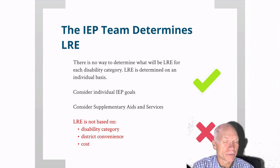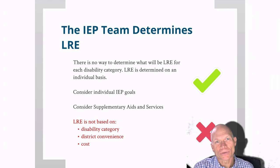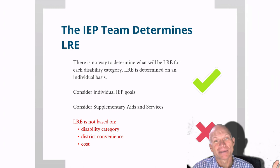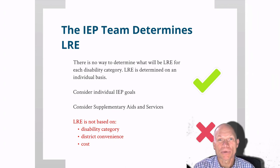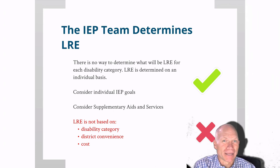LRE should not be based on the disability category, and it should not be based on district convenience. Just because a district has a specific classroom for a disability category or a certain type of teacher at another school doesn't mean they're allowed to shift a child to that school. Cost also cannot be the determining issue — a district cannot say they don't have money to provide a child with a medical assistant to give diabetes injections twice a day. LRE must be based on individual need.